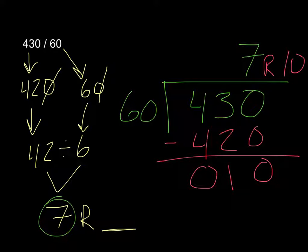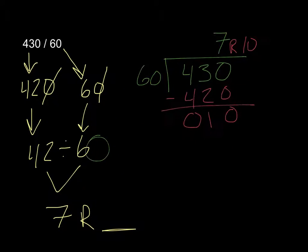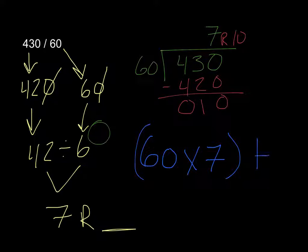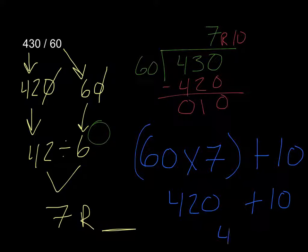To check my work, remember, I'm going to multiply up. So I take my divisor of 60, and I multiply that by my quotient of 7, and then add the remainder. 60 times 7 is 420 plus 10, which is 430.